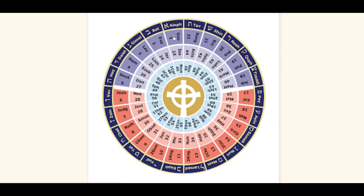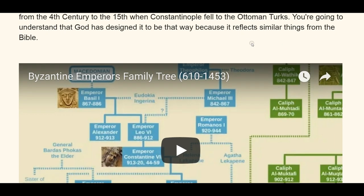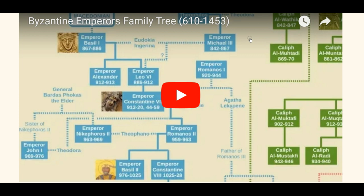I put down the diagram of the Bible Wheel, starting with the first book Genesis to the 22nd book Song of Solomon. The second cycle starts with Isaiah as the 23rd book and ends with the 44th book Acts, plus the 22 epistles. I also put a video on the genealogy of the Byzantine Emperor's family tree, ranging from 610 to 1453 when the Byzantine Empire collapsed, and I did research on other kingdoms as well.